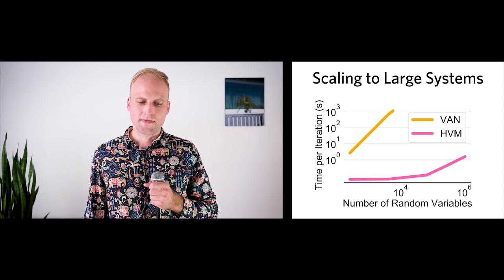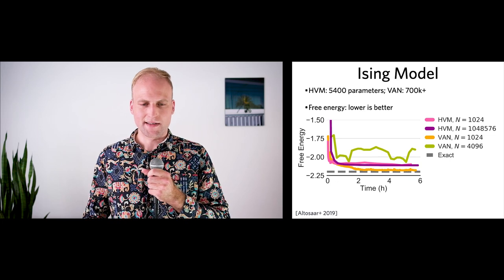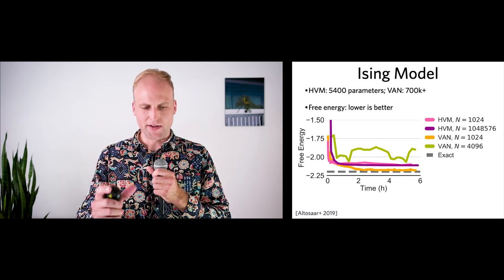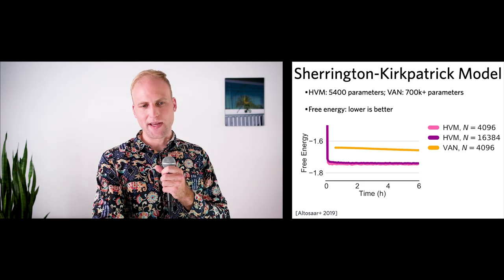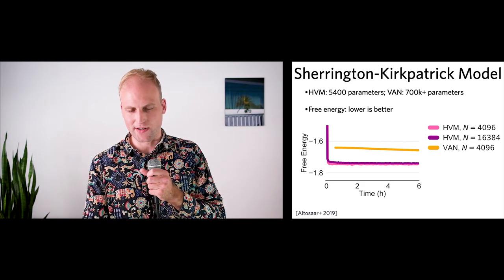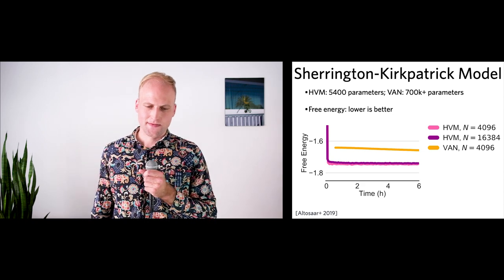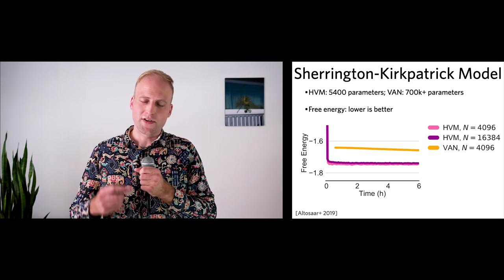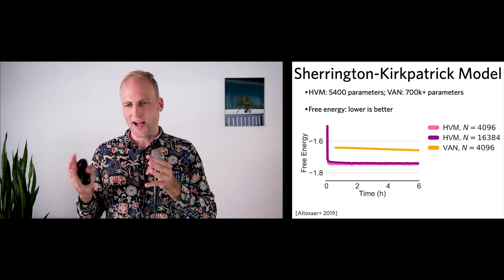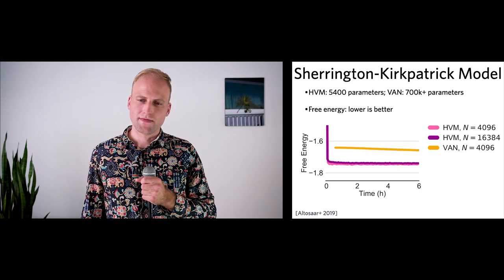Q: Can you give a feel for how long the entire process takes, how many iterations? A: Working backward from the convergence plot, within about 10 minutes the hierarchical variational model approach converges — marginal improvements in the objective function within 10 minutes to half an hour. The model with larger number of parameters takes longer due to quadratic scaling in the number of random variables.